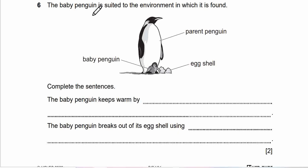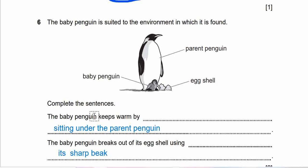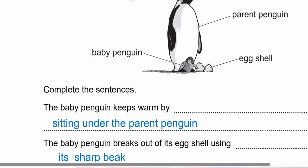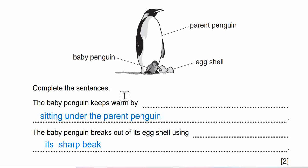Question 6 says, the baby penguin is suited to the environment in which it is found. This is parent penguin, baby penguin, eggshell here. Complete the sentences. The baby penguin keeps warm by, and the baby penguin breaks out its eggshell using what? Get your answer. Let's check it out. So baby penguin keeps warm by sitting under the parent penguin here. Baby penguin breaks out of its eggshell using its sharp beak. You can see clearly.